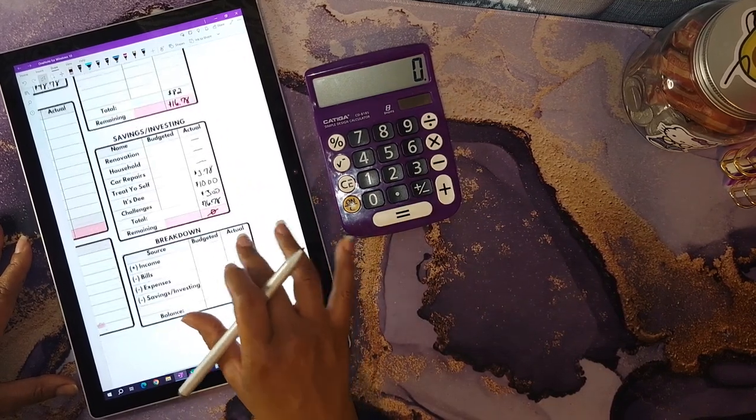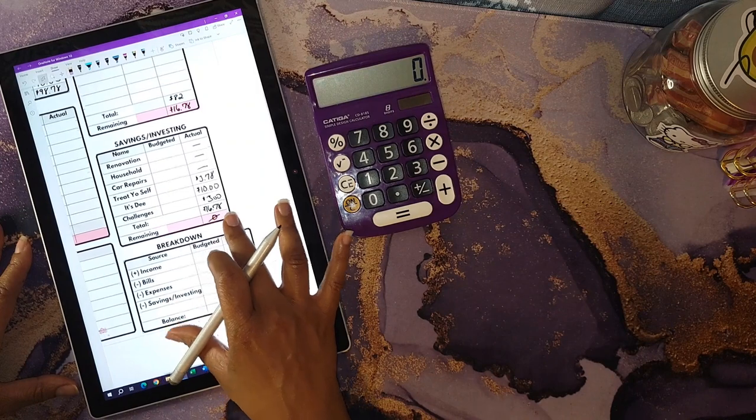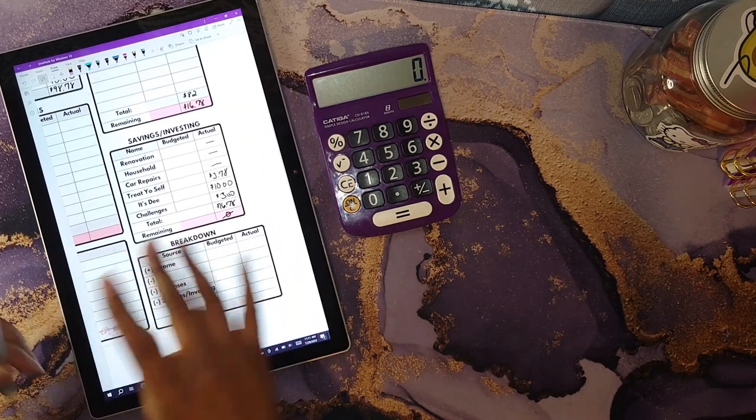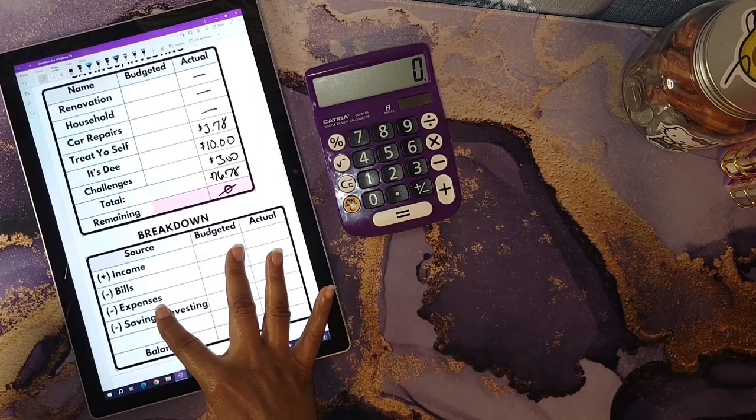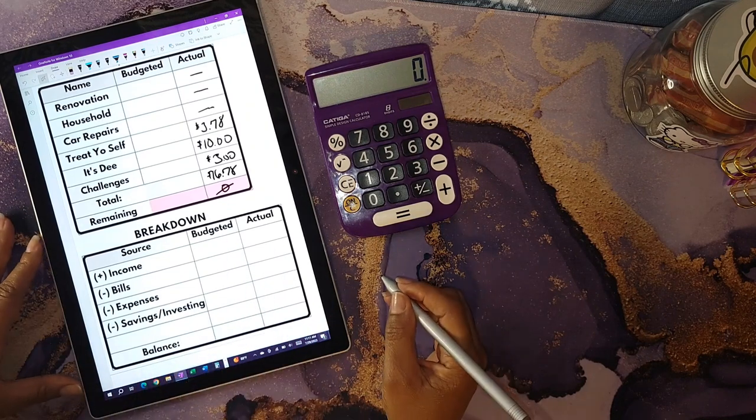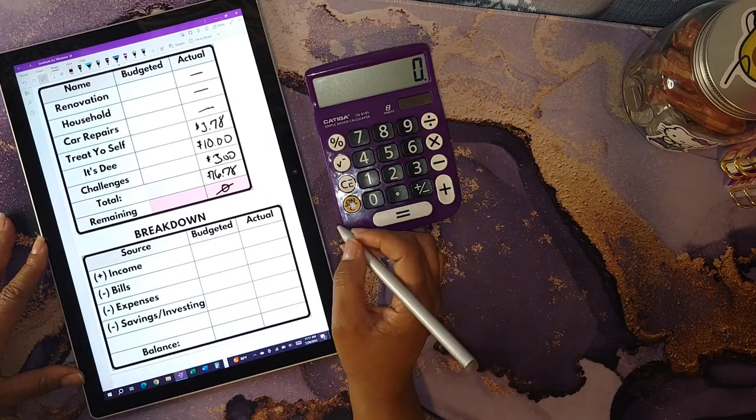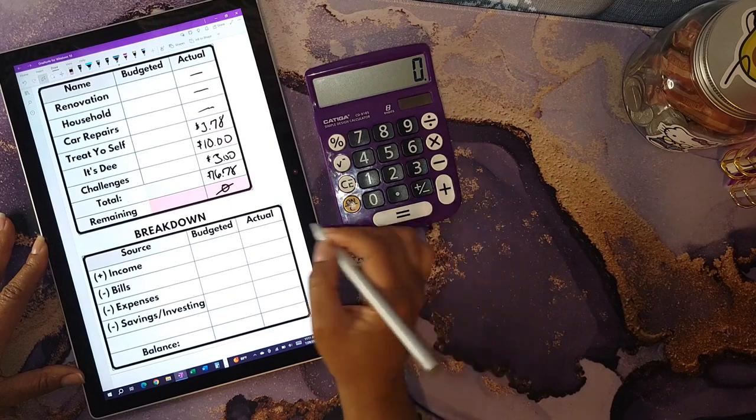Now I will be getting into the double check to make sure that I do actually have a zero-based budget. That is in this last section, which is the breakdown to make sure that I allocated my money correctly.